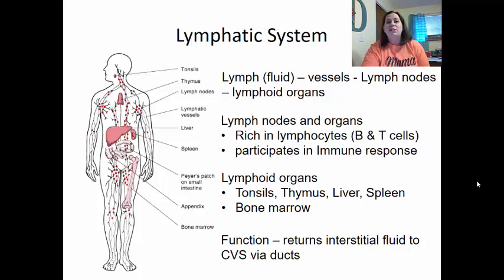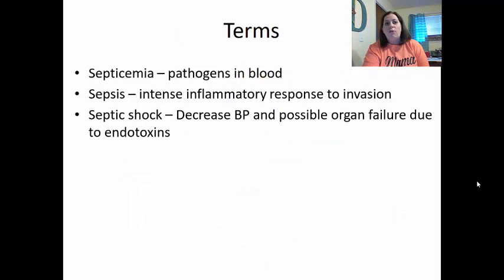Some key terms: septicemia is where there are pathogens in the blood. Sepsis is an intense inflammatory response to an invasion — your immune system is fighting the invader but causing intense inflammation in the process. Septic shock involves decreased blood pressure and possible organ failure, which can be due to toxins, especially endotoxins released when the immune system deals with the invader.